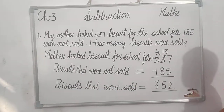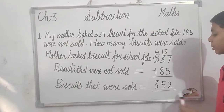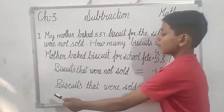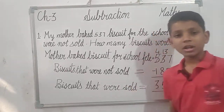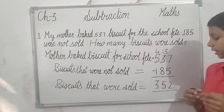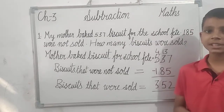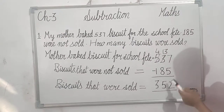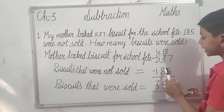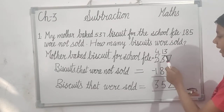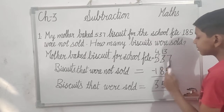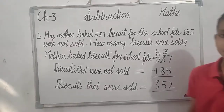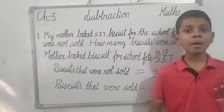So 527 minus 185. Working through the subtraction: 7 minus 5, 2 minus 8... the answer is 352 biscuits were sold.